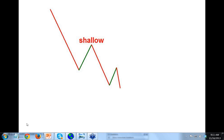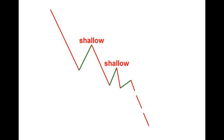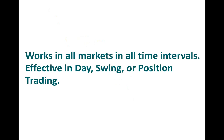A strong downtrend has shallow retracements. If you have another measure move following it and it's also shallow, the downtrend is still intact. With a strong downtrend, it may work its way down even more. If you want to do a breakout — bullishly or bearishly — this is the pattern type where you want to do that. This works in all markets and all time frames — effective for day trading, swing trading, and longer-term position trading.